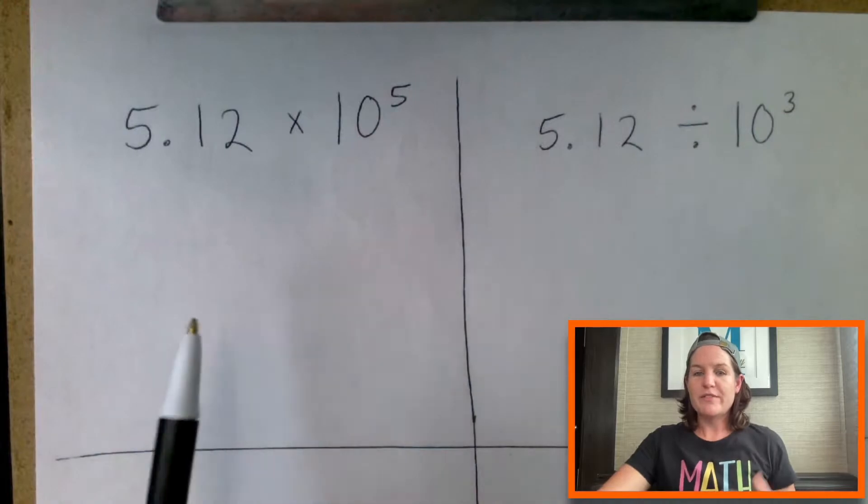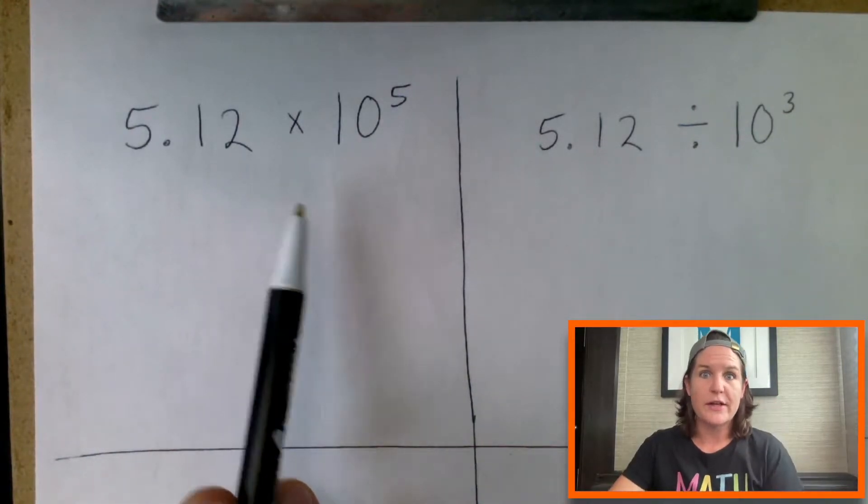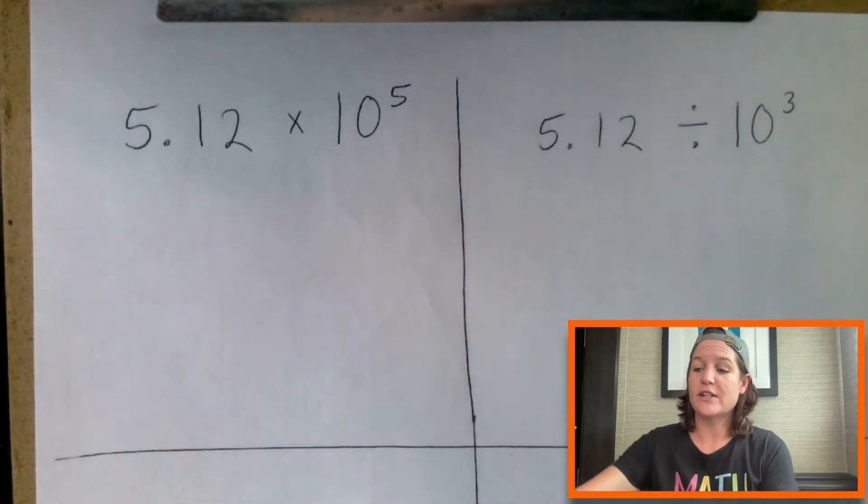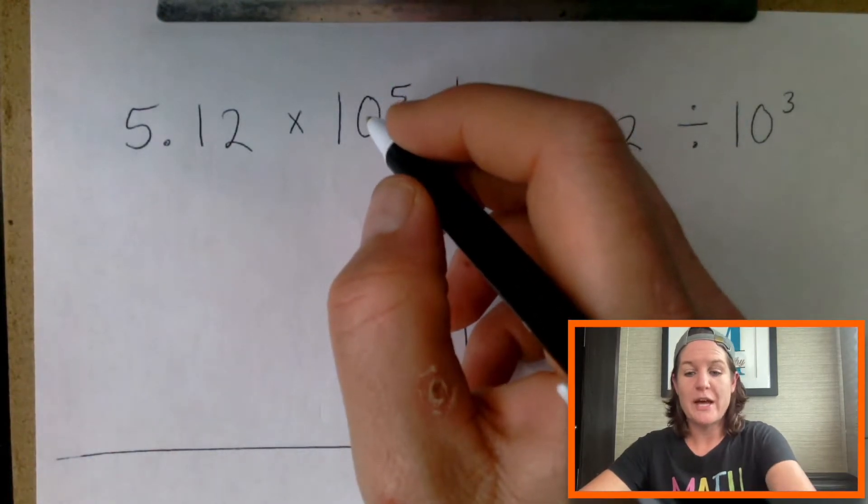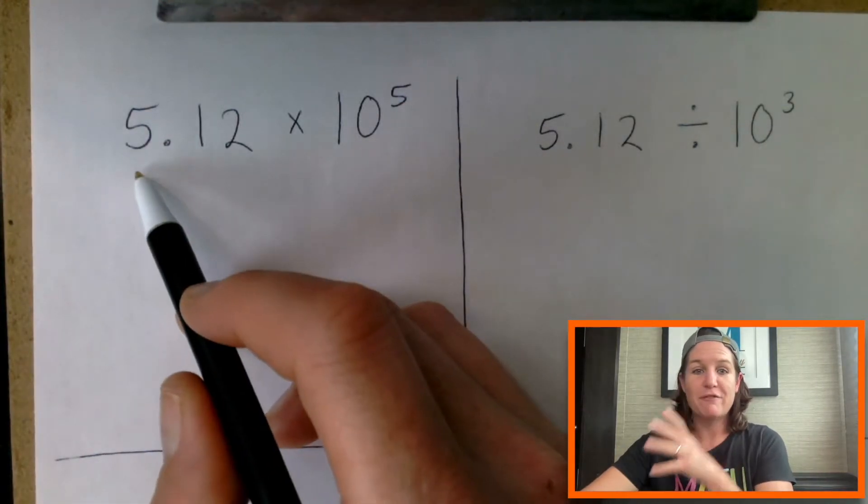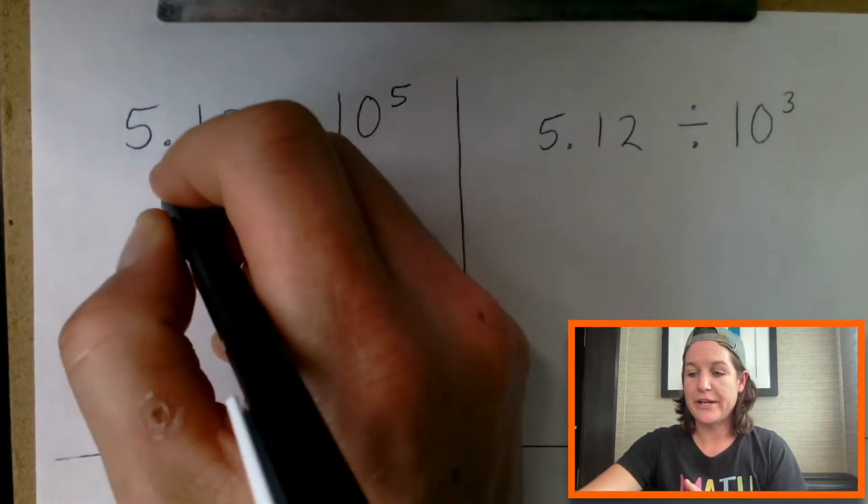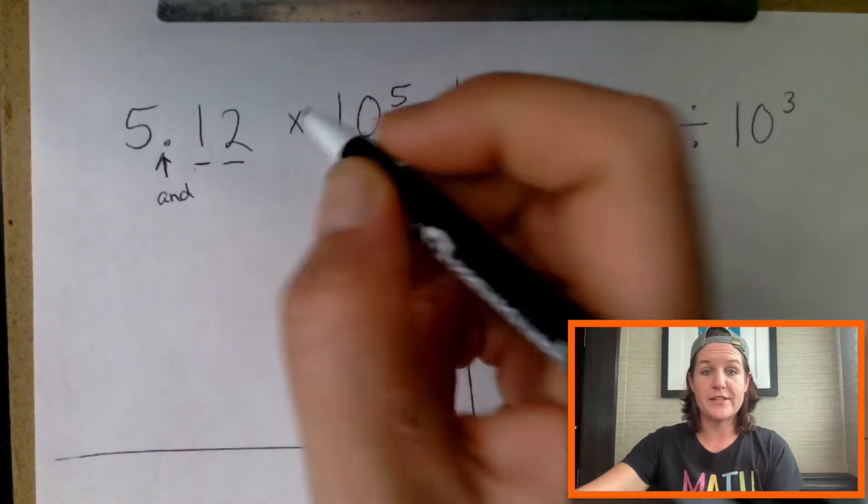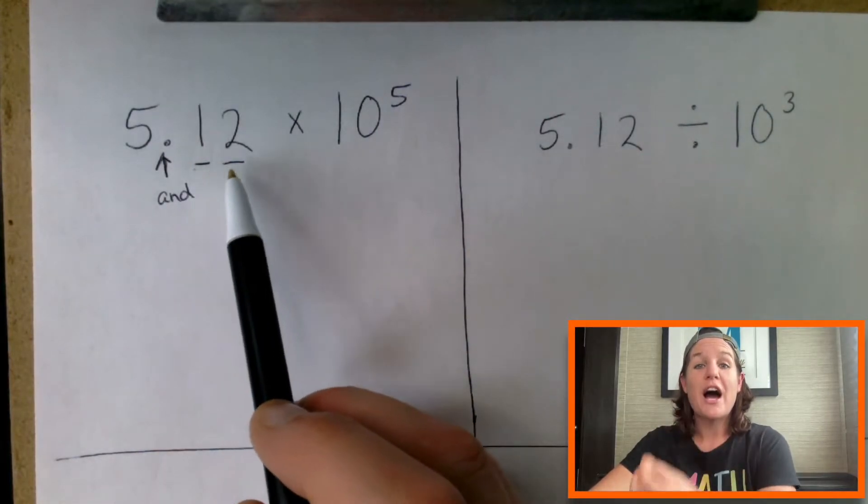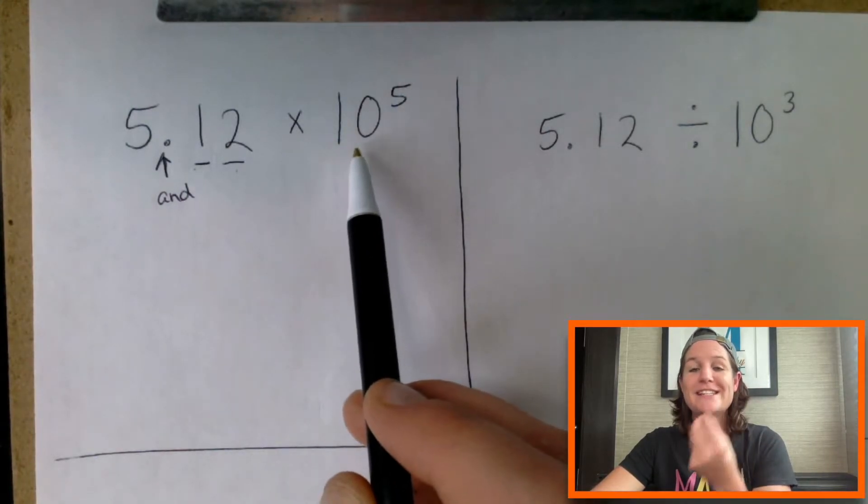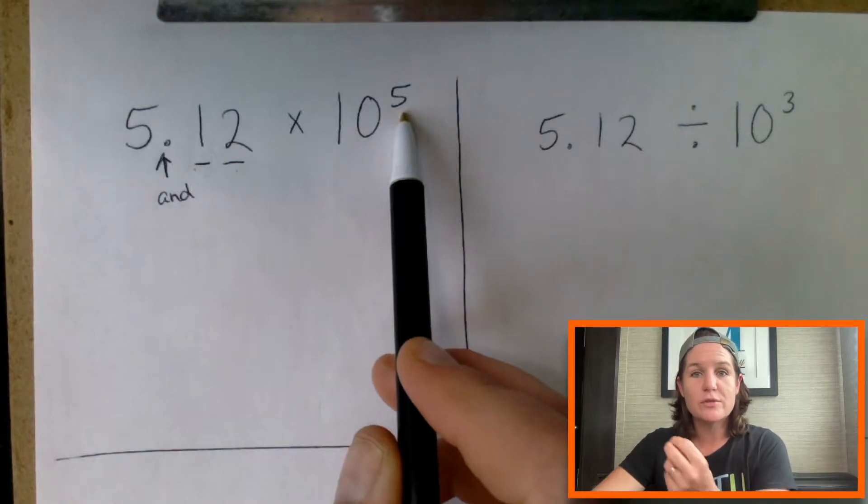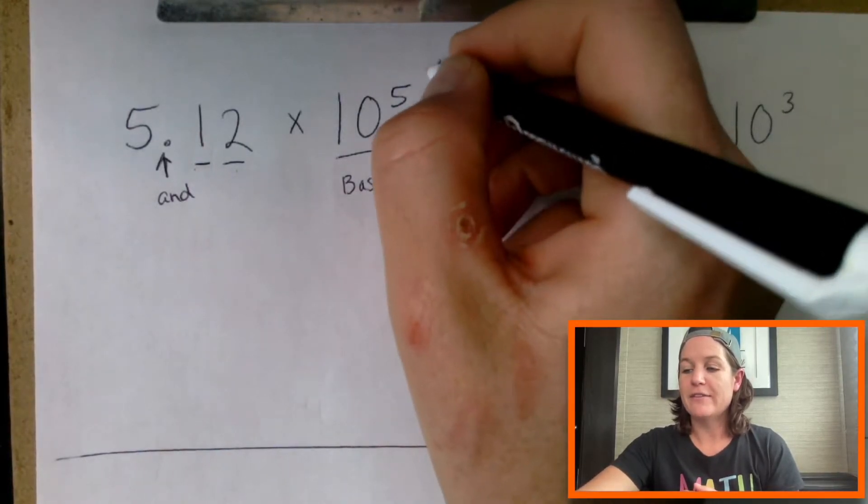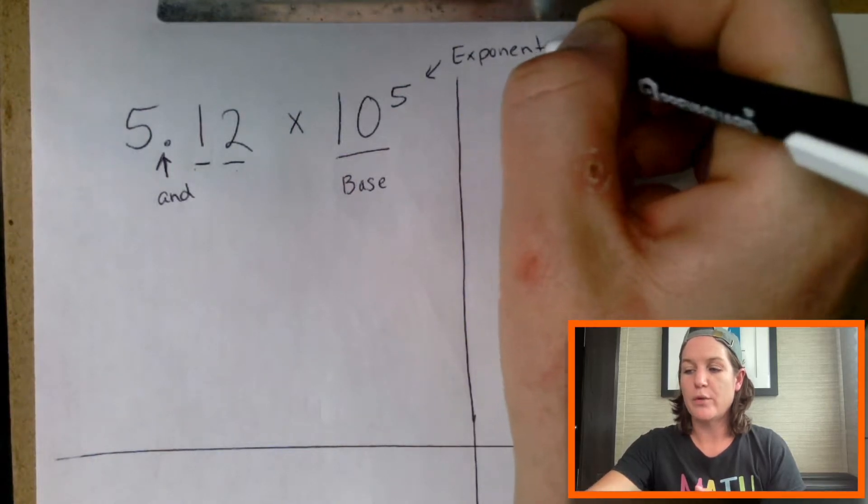We'll start up here. We've got a decimal here and really this whole unit is on place value, believe it or not. We're shifting place value because all of the powers are powers of 10. Let's break down some of this vocabulary. This is five and 12 hundredths - the decimal stands for 'and', this is the tenths place and this is the hundredths place. So this would be five and 12 hundredths times 10 to the power of five or 10 to the fifth power. The 10 is called the base and the five is called the exponent.